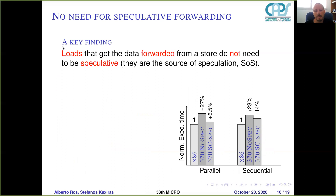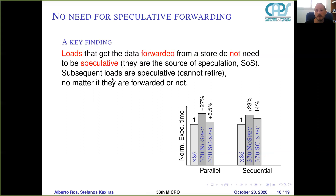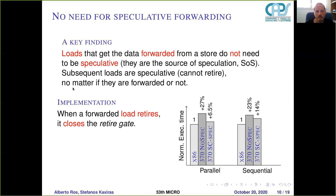Can we do better? We have a key insight in this paper: loads that get data forwarded from a store do not need to be speculative, in contrast to the SC speculation solution. We call them the source of speculation, or SOS. Subsequent loads to forwarded loads will be speculative and cannot retire, but the forwarded load itself — the first one in the pipeline — can retire. Subsequent loads cannot retire regardless of whether they are forwarded or not.